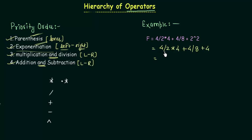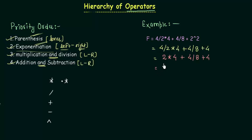The division is on the leftmost side, so we deal with this division first. 4 divided by 2 gives us 2, then the multiplication of 4, and the rest of the things remain the same. In the next step we again have a multiplication on the leftmost side, so we do this multiplication: 2 multiplied by 4 gives us 8.